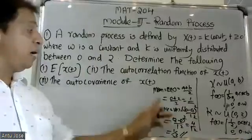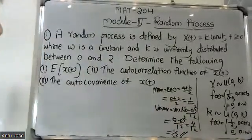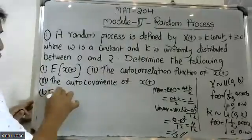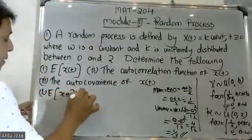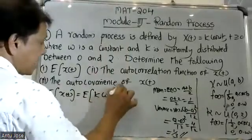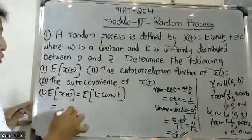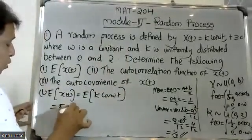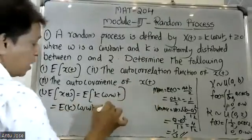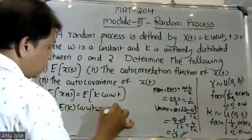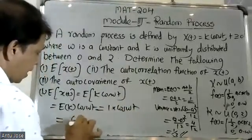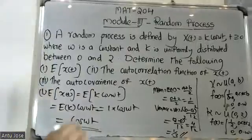So the mean E[k] = 1 and variance = 1/3. Now, E[x(t)] = E[k·cos(ωt)] = E[k]·cos(ωt). Since E[k] = 1, therefore E[x(t)] = 1·cos(ωt) = cos(ωt).